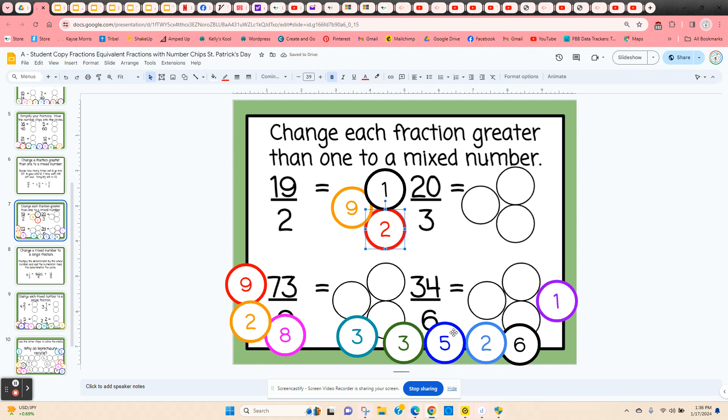That denominator stays the same. This one, 6 goes into 34 five times. And there's four sixths left over, which they need to simplify to two thirds.